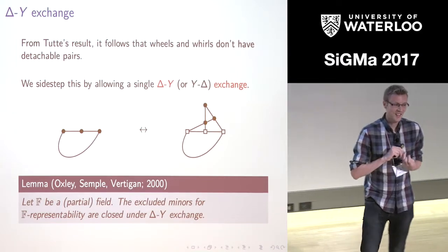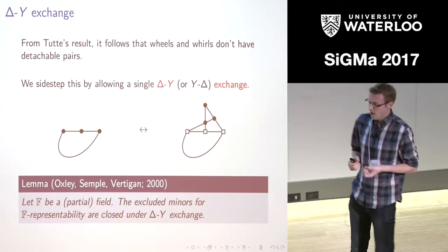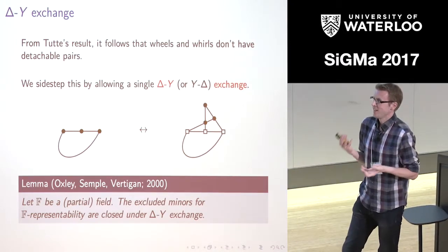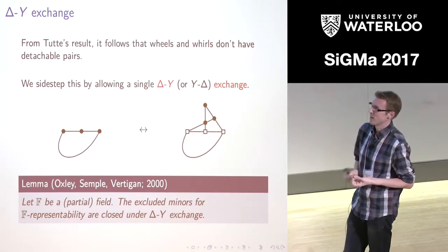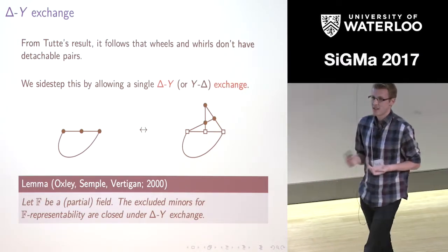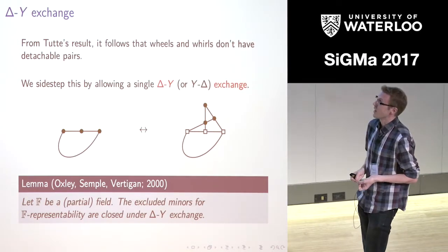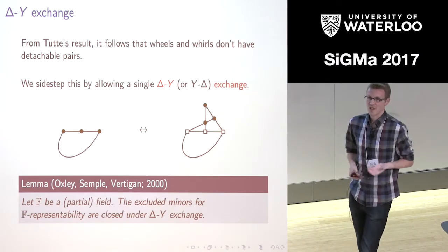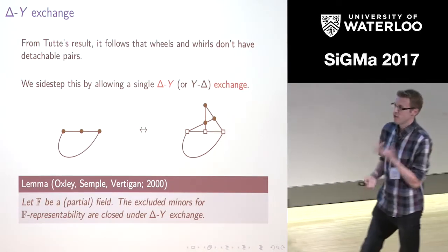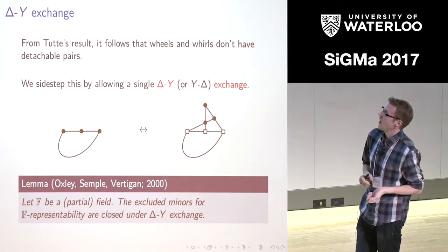There's one more thing I need to mention, and that's the idea of delta-Y exchange. From Tutt's wheels and whirls theorem, there are situations where triangles and triads can align in just the wrong way so that we cannot find an element to delete or contract and keep three-connectivity. We sidestep this issue by using delta-Y exchange — our get-out-of-jail-free card, which we play wherever we can. Delta-Y exchange is a generalization of the graph operation — from a matroidal point of view, if you take a triangle and glue on a K4 along that triangle, removing the elements of your initial triangle, that is our delta-Y exchange.